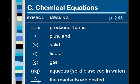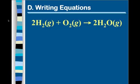If you see an arrow with a triangle over it, that triangle is a special triangle. That triangle is known as delta. That means heat was added to the reaction.